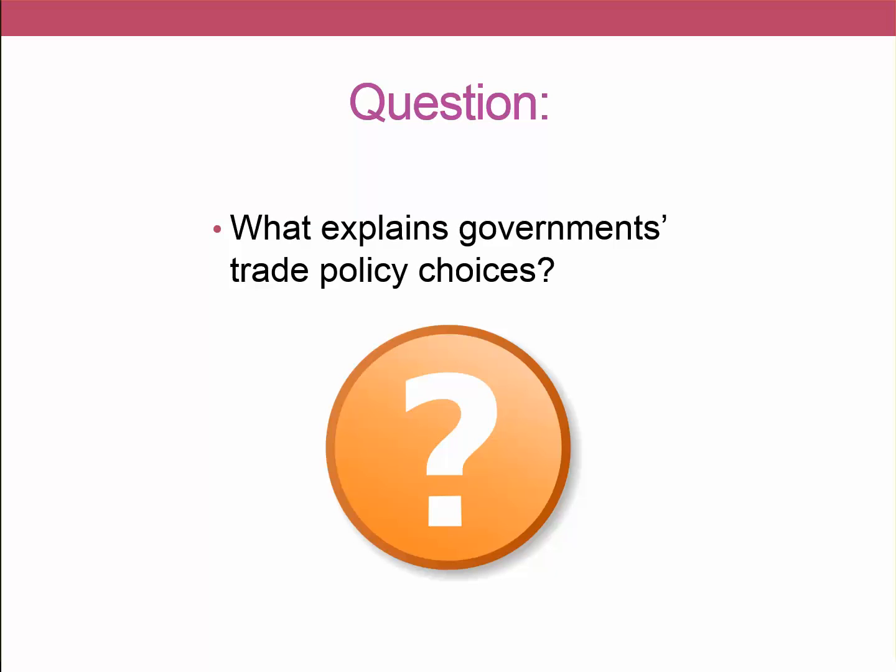In other words, why do some governments opt to open up their economies to foreign competition while other governments choose to protect their economies from foreign competition? Similarly, we might ask why one government may decide to protect a certain sector of the economy — say agriculture — from foreign competition, but allow another sector, say manufactured goods, to be open to free trade. What explains that variation in government policy choices over trade policy?